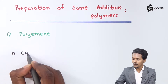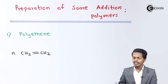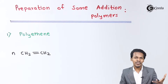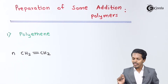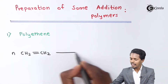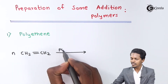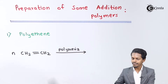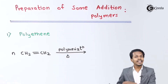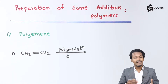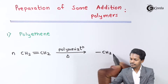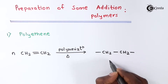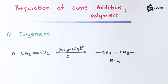This is the reaction we discussed in our previous examples for the free radical mechanism — the polymerization of ethene. So if n moles of ethene undergo the polymerization process, by providing a certain catalyst or initiator, this will form a repeating unit. That repeating unit is nothing but –CH2–CH2–.